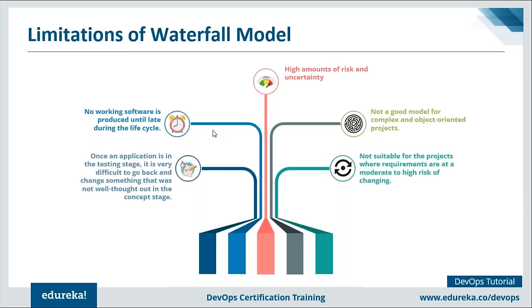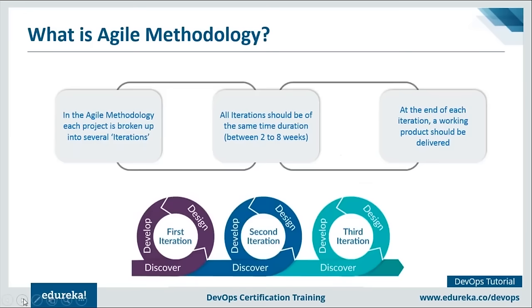Now we'll focus on agile methodology. Agile promotes continuous iteration of development and testing throughout the software development lifecycle. We get feedback from previous iteration testing, redesign and redevelop the application, test it again, and incorporate discoveries. There are multiple iterations involved. Each project is broken into several iterations of equal duration - generally two to eight weeks - and a working product should be delivered at the end of each iteration.